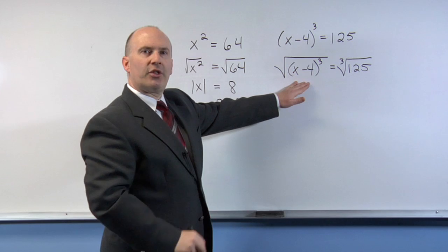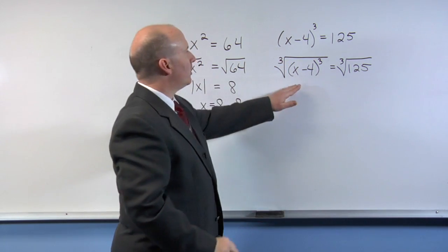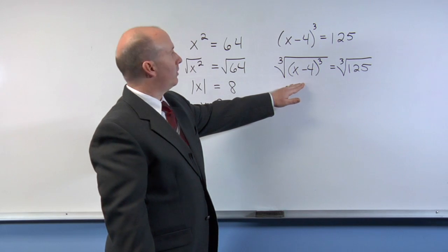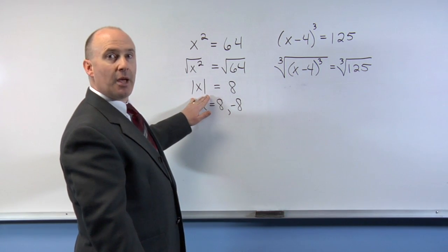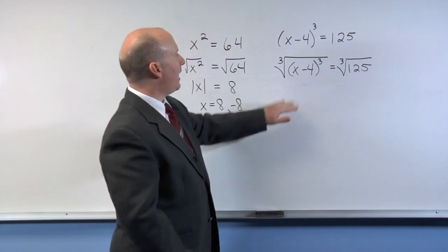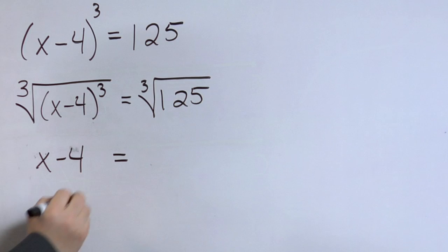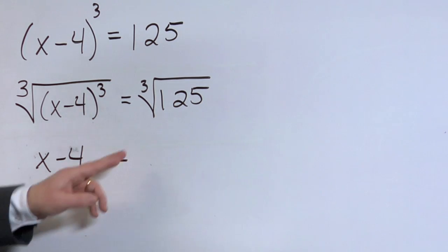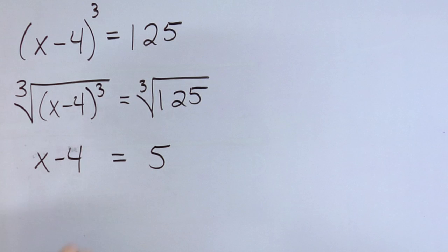Now since 3 is an odd number, and we take a cube root on both sides of the equation, we do not result with absolute values. Instead, we're going to have just x minus 4 on the left side, and on the right side, the cube root of 125 is 5.